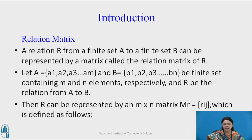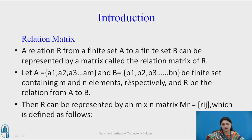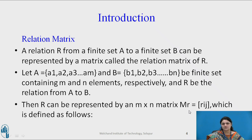Let us take a simple example. Let A equal to A1, A2, A3 till AM, and B equals to B1, B2, B3 till BN. These are elements in the sets — A1 to AM are elements of set A, B1 to BN are elements of set B. These sets are finite sets containing M and N elements respectively, and R is the relation from set A to B.